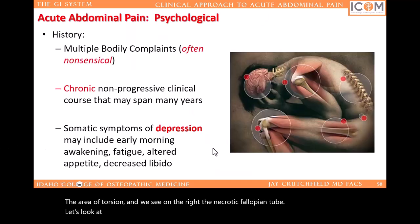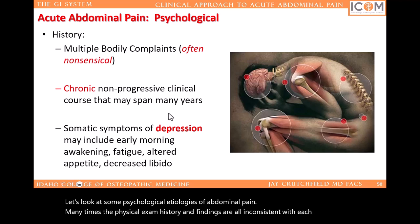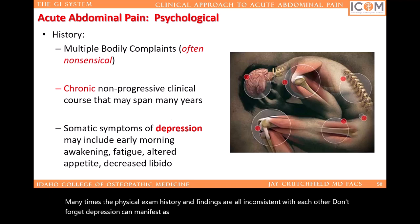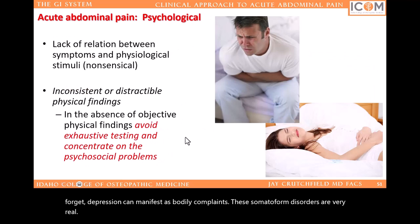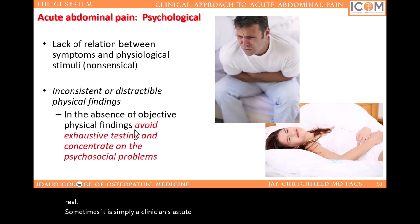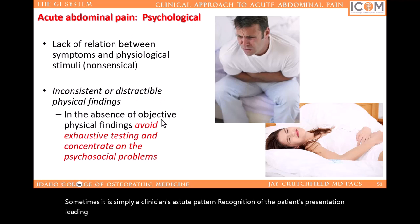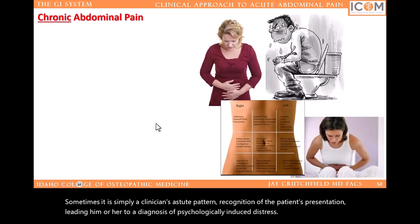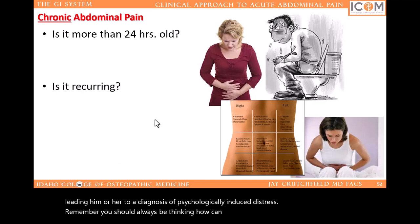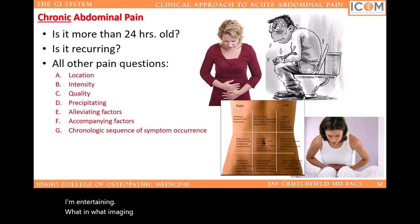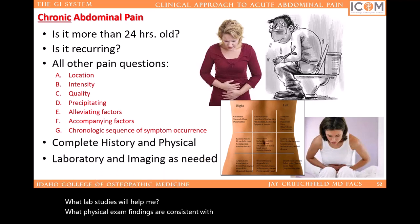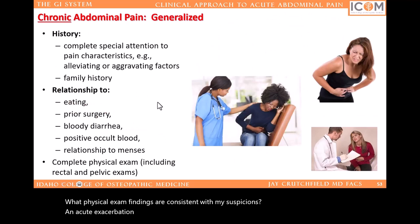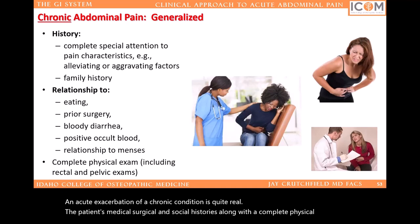Let's look at some psychological etiologies of abdominal pain. Many times the physical exam, history, and findings are all inconsistent with each other. Don't forget, depression can manifest as bodily complaints. These somatoform disorders are very real. Sometimes it is simply a clinician's astute pattern recognition of a patient's presentation leading him or her to a diagnosis of psychologically induced distress. Remember, you should always be thinking: how can I support my suspicions for the diagnosis I'm entertaining? What imaging studies do I need? What lab studies will help me? What physical exam findings are consistent with my suspicions?